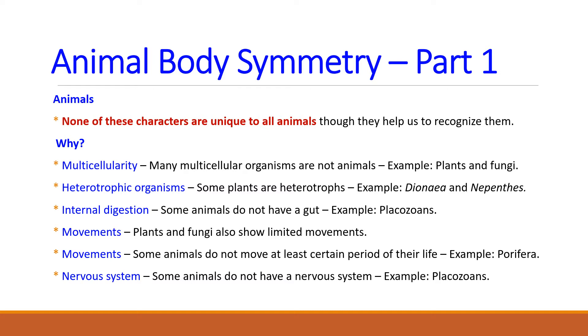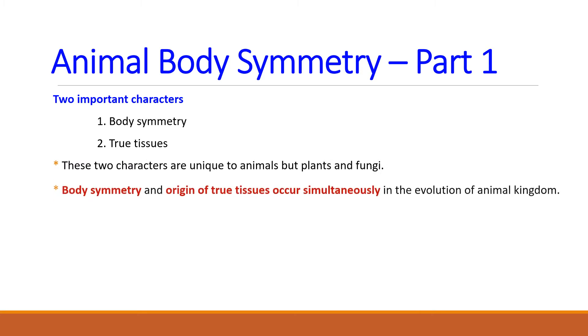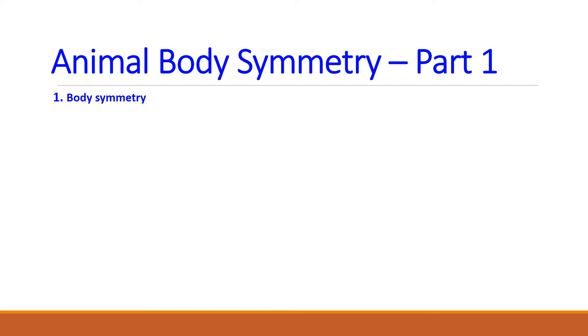Now, I am going to show two characters which can be used to separate animals from plants and fungi. The two important characters are body symmetry and true tissues. These two characters are unique to animals. More importantly, these characters occur simultaneously in the evolution of animal kingdom. Let's take the first important character, body symmetry. You should know some concepts and definitions regarding the basic animal architecture.